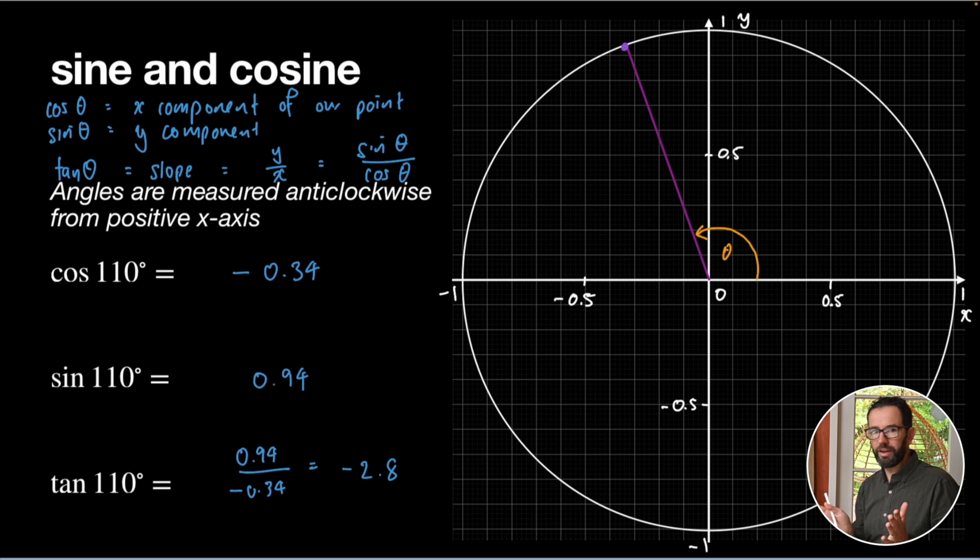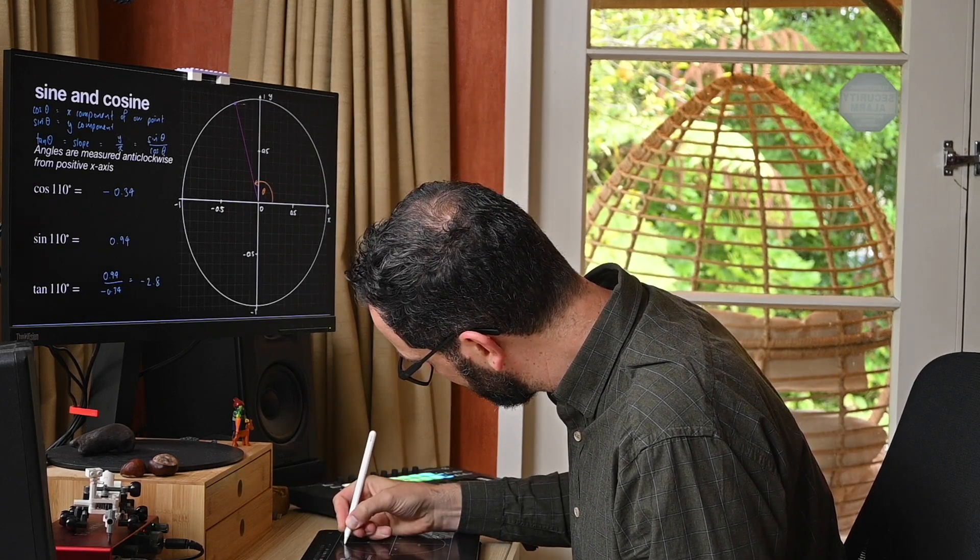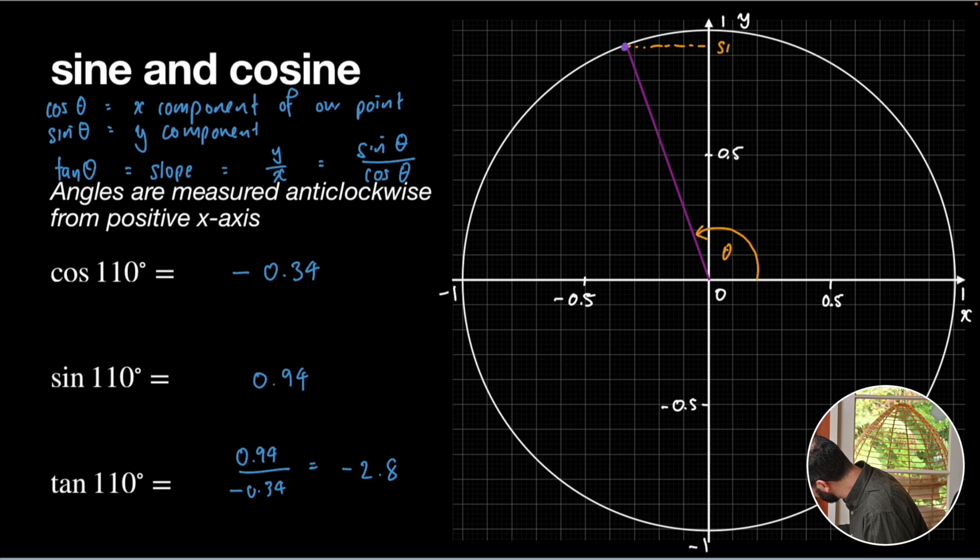So, these values, they're not just magic. I mean, we can get them out of our calculator for sure, but they also are literally just numbers that we can read off this picture. So, we can always see that our y-coordinate, that's sin θ, and our x-coordinate, that's cos θ. And then tan θ, like I said, was just the slope of that graph.